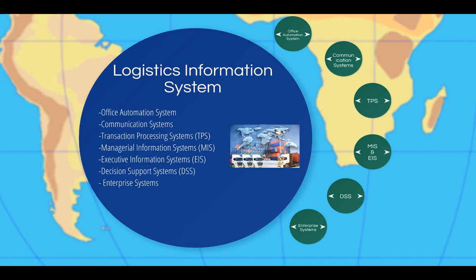There are six types of information systems applicable to every business system. These include office automation systems, communication systems, transaction processing systems or TPS, management information systems or MIS, executive information systems or EIS, decision support systems or DSS, and enterprise systems. Let's examine each of these in a little bit more detail.